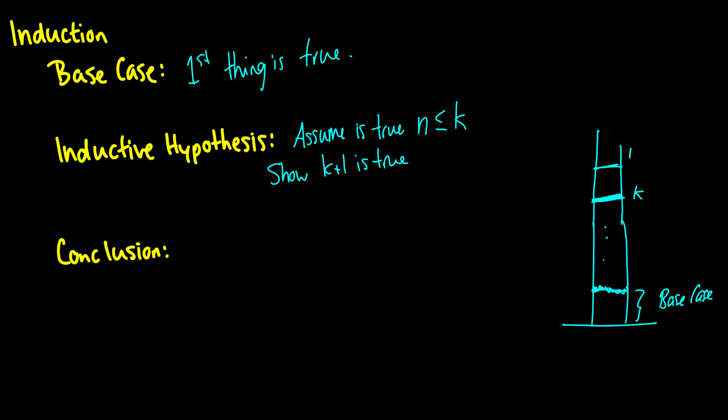And then you want to show that k plus one is true. So what this is saying is that if I'm at some random step, then I should be able to get to the next one. If I pick an arbitrary step, then I should be able to lift my leg, and there should be some next step that I can get to. And if that is true,